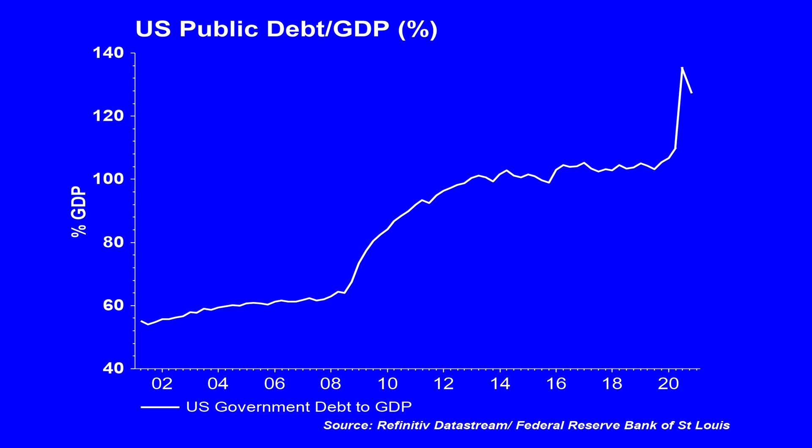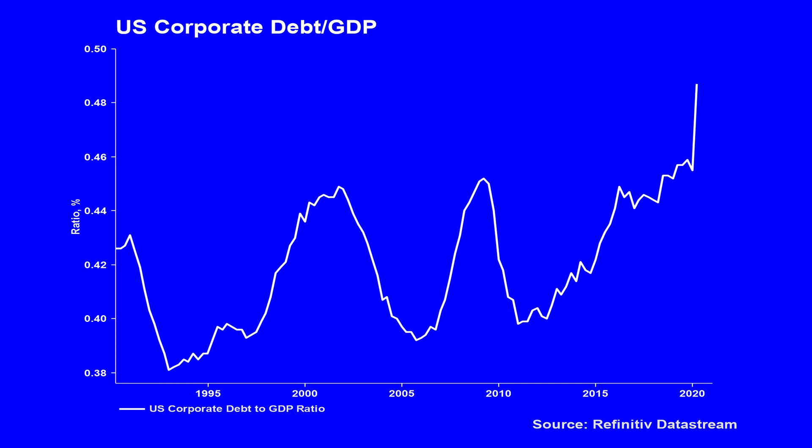Excessive debts are not necessarily a negative if the ability to pay those debts remains manageable. The lowering of interest rates and the extension of maturities has seen many regions experience lower financing costs, even as total levels of debt increased. But during the pandemic, debt levels have expanded. Government fiscal packages have pushed many regions into debt ratios well above 100% of GDP. US corporate debt to GDP was already at a record level after years of debt-financed stock buybacks, and this has moved higher again during the pandemic.